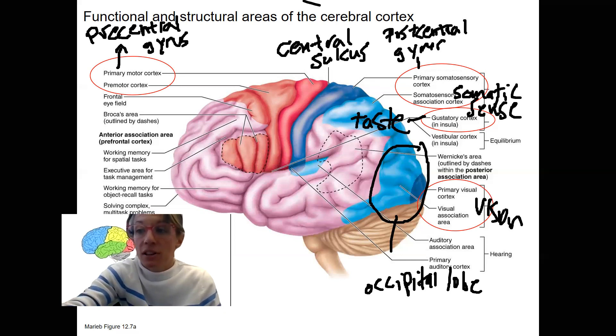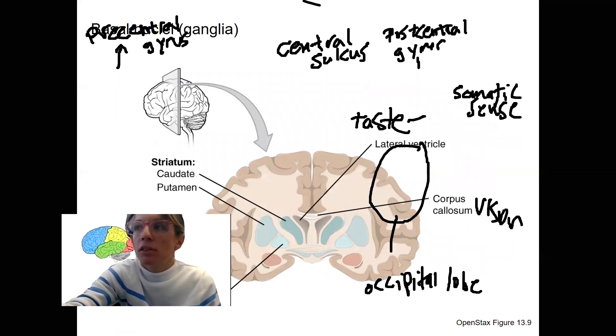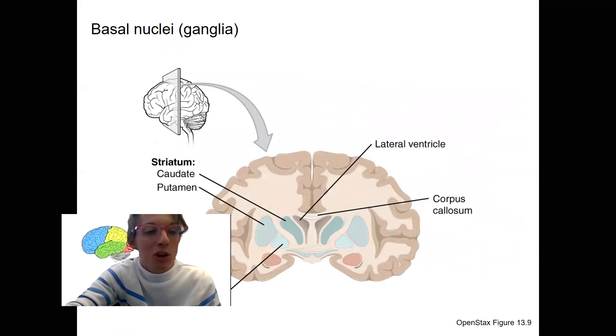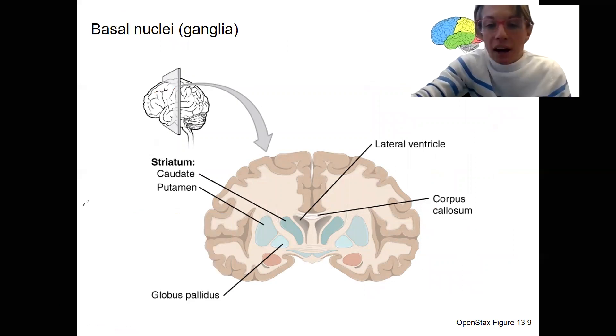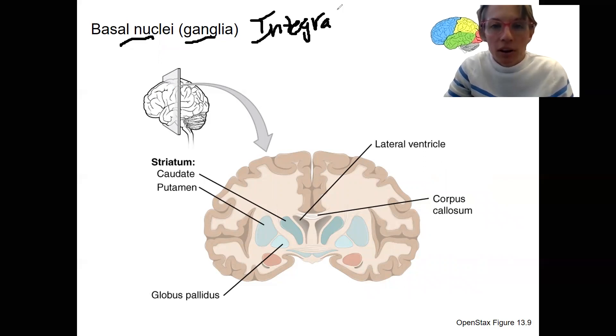Okay, last thing for this video is going back briefly as part of the cerebellum. I'm sorry, part of the cerebrum. Remember, those basal nuclei are the gray matter that are embedded deeper than the cortex. Unfortunately, another name for basal nuclei is basal ganglia.